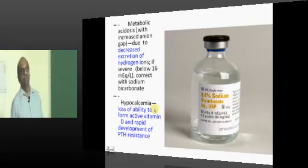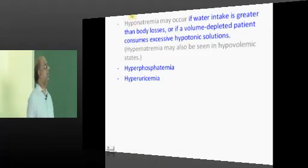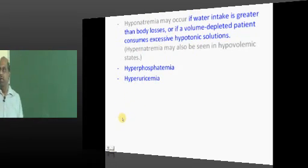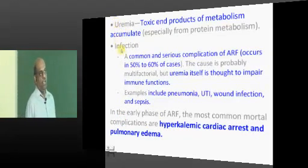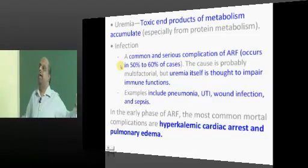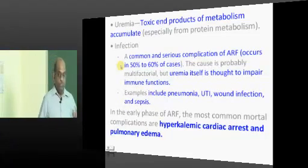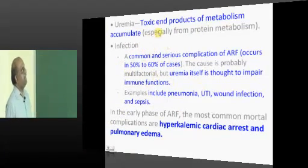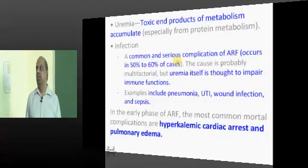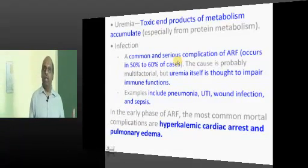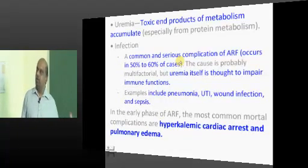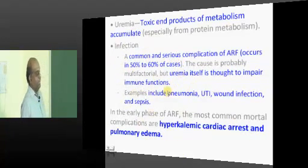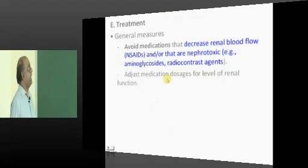Hypocalcemia is another important thing to manage in ARF. There can also be hyponatremia, hyperphosphatemia, and hyperuricemia — manage them accordingly. The waste product urea cannot be lost from the body, hence there is uremia. You need to get rid of this uremic state, acutely by doing dialysis, in order to overcome the effects of uremia in a patient of ARF.